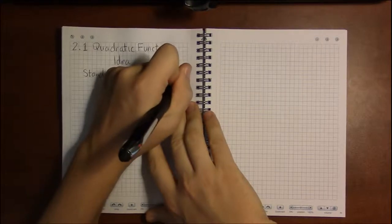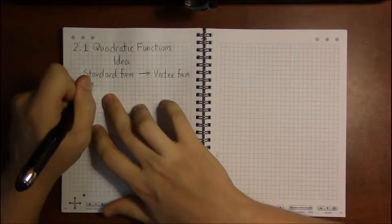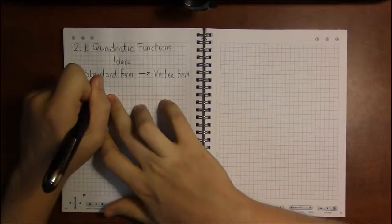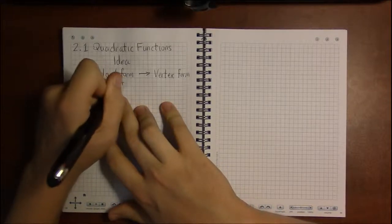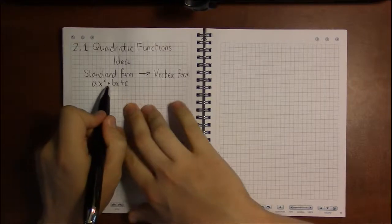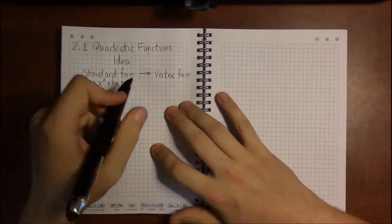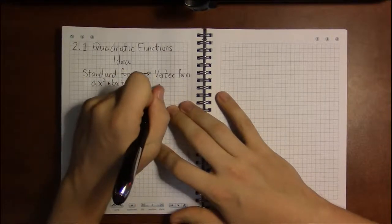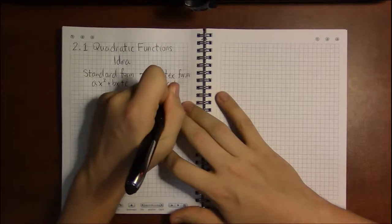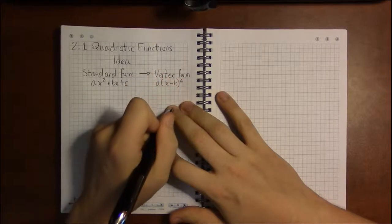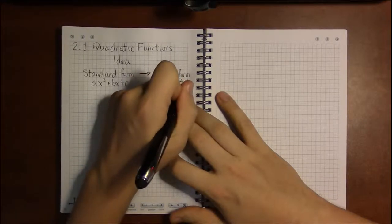So to remind you, standard form is ax squared plus bx plus c. Some number times x squared plus some number times x plus a third number. And vertex form is a times x minus h squared plus k.